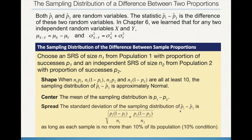We can generalize this idea with the following statements. For shape: if we check the large counts condition as we would for any distribution, the sampling distribution of the combination should be approximately normal. The center should be the difference of the actual parameters, p1 minus p2. For spread: because we combine variances and then take the square root, we get the standard deviation equation shown here. This is only true if the 10% condition is satisfied so that independence is maintained.